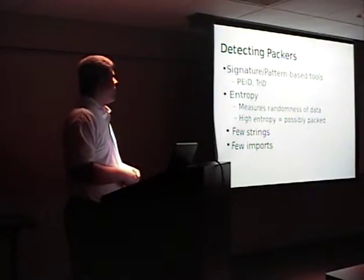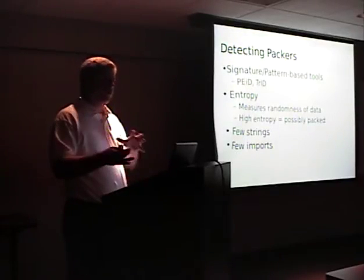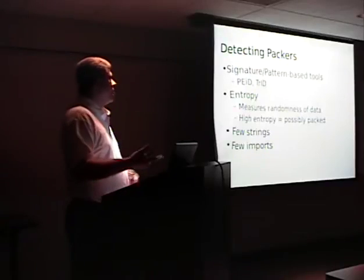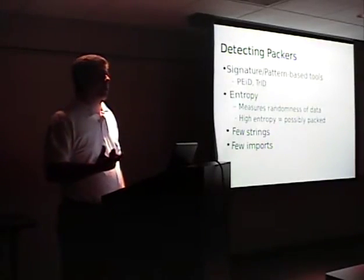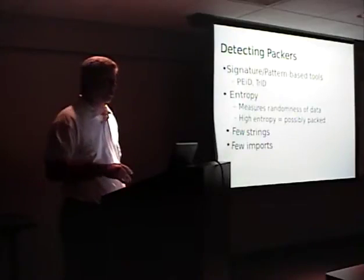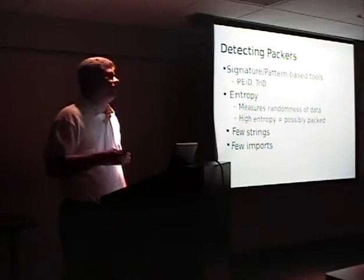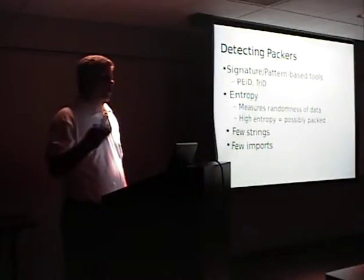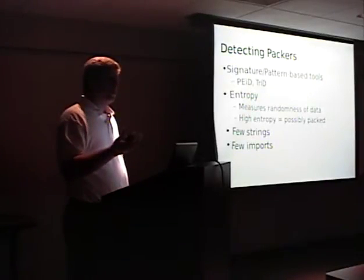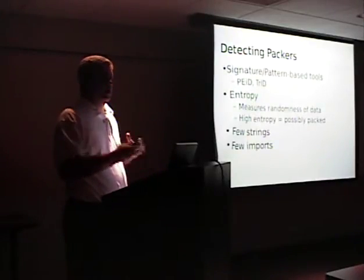You can look at the entropy of a file — entropy measures how random a file is. The higher the entropy, the more random the file is, and therefore the more likely it's been packed, compressed, or encrypted. You can also look at embedded strings. Embedded strings are things like error messages — like in Doug's program. From malware you can get URLs, file names, registry keys it will modify, sometimes even developer names. If you don't see very many strings, that's a good indication the file has been packed, because the packer compresses those strings as well.